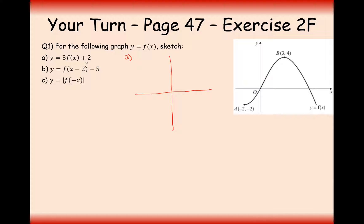For the first one, we've got two transformations outside the brackets — two y-axis transformations — so it's important we apply BODMAS. Let's follow the A coordinate, working only with the y-coordinate of minus 2. So 3 times minus 2 is minus 6, then move up by 2 from the plus 2 transformation, giving minus 4. So A prime is going to be at (minus 2, minus 4).